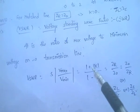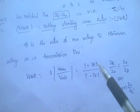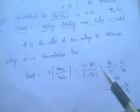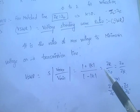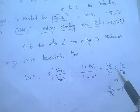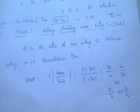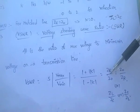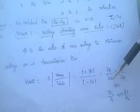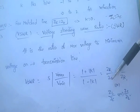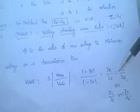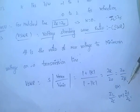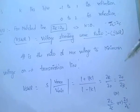VSWR is equal to 1 plus mod K by 1 minus mod K, where K is the reflection coefficient. Or VSWR is equal to ZR by Z0, or Z0 by ZR — whichever is greater. ZR is the load impedance and Z0 is the characteristic impedance.